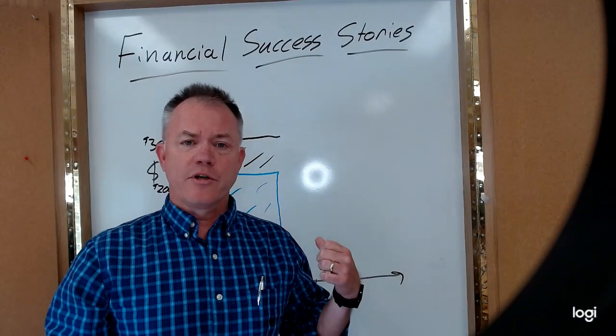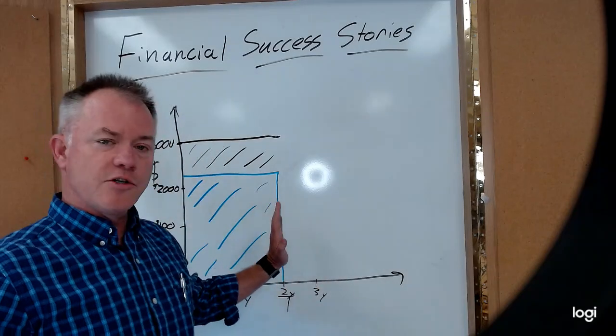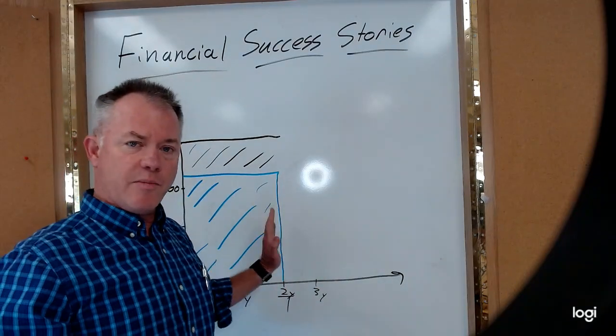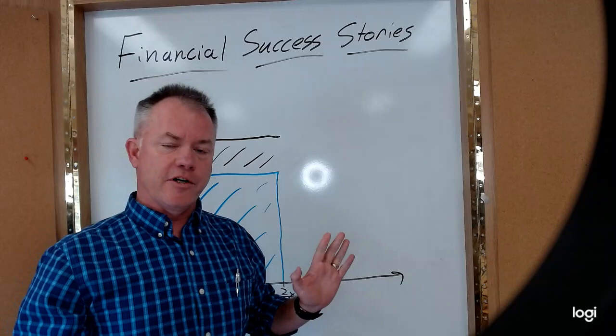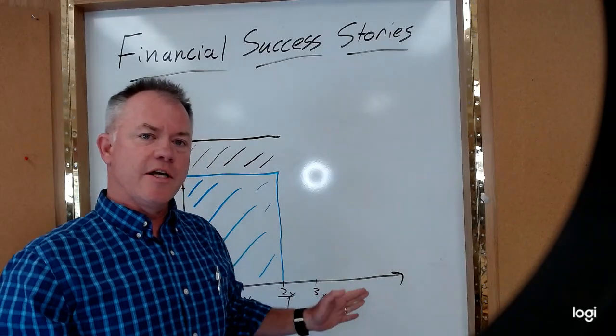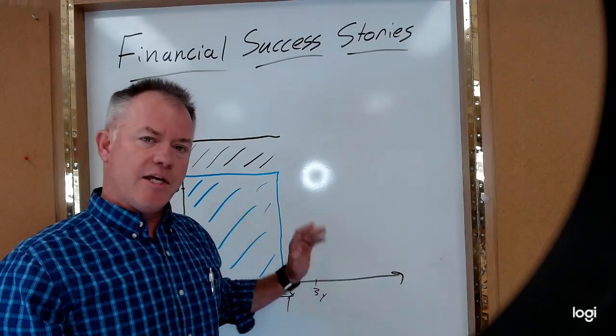And what happened with the group plan at the end of two years was the own occupation. So if you're unable to perform the functions of your own occupation, you're covered. But at the end of that, that ended and it became any occupation.